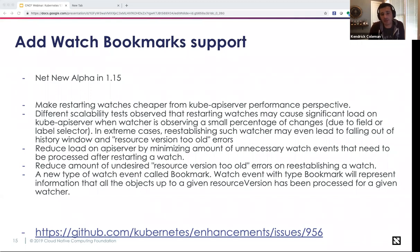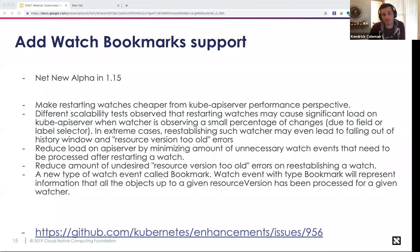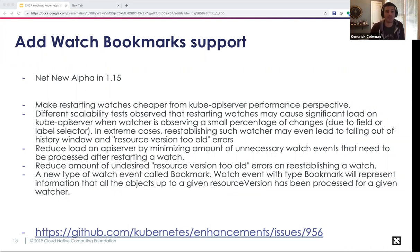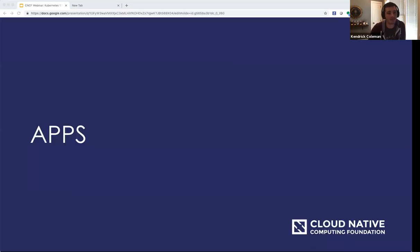The goal is to reduce load on the API server by minimizing unnecessary watch events that need to be pre-processed after restarting a watch. The proposal introduces a new type of watch event called 'bookmark'. A bookmark event represents that all objects have been processed up to a given resource version for a watcher. So even if the last event contains an object with resource version rv1, receiving a bookmark with rv2 means there are no interesting objects for that watcher in between.